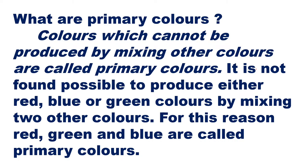It is not possible to produce red, blue, or green by mixing two other colors. For our color TV, we use red, blue, and green — RGB — as the primary colors. These basic colors are independent of each other; they cannot be produced by mixing any other two colors, and any other color can be produced by mixing these three.